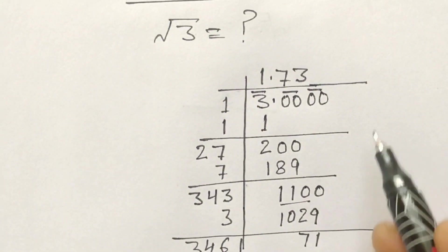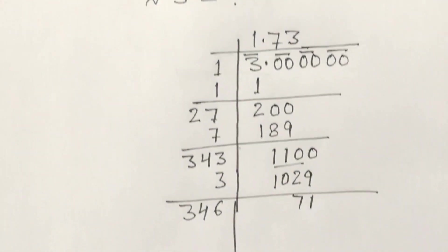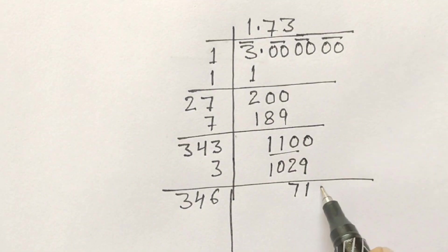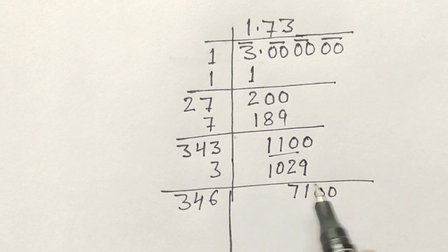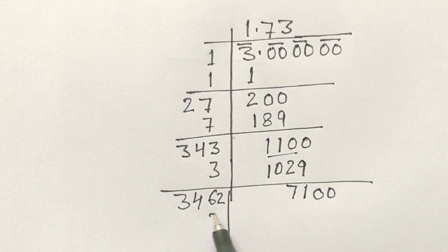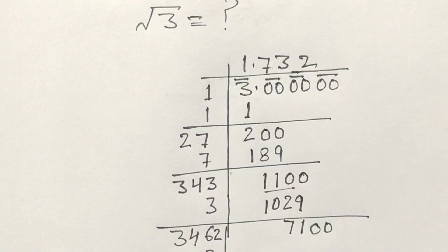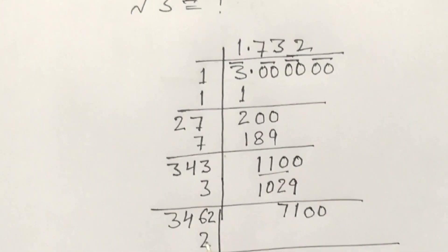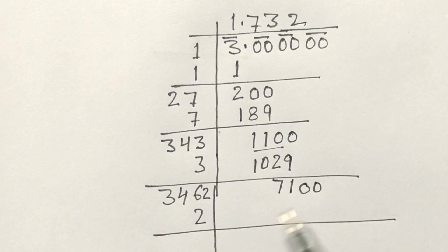Now 1100 minus 1029, what will remain? 71. So here we will write down 0 with pair. Now 2 times, so here 2 and here also 2.